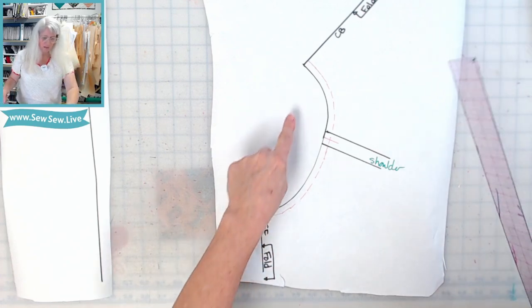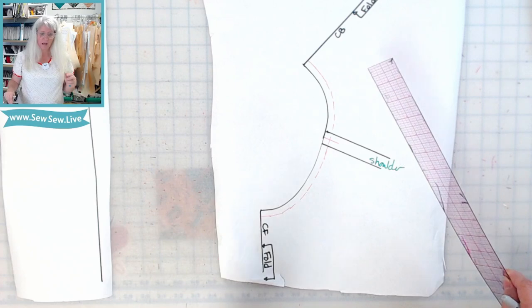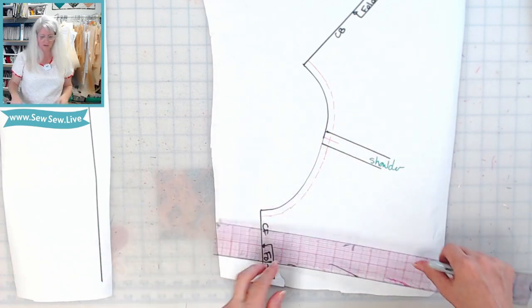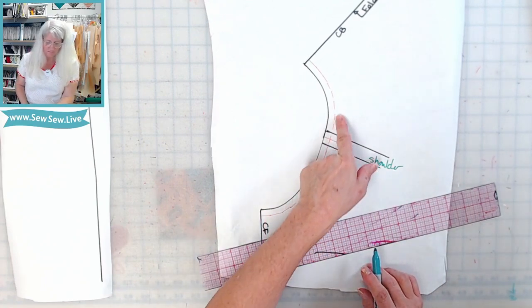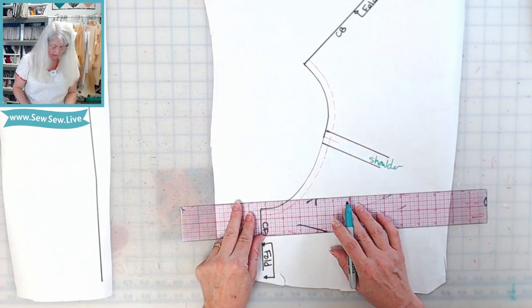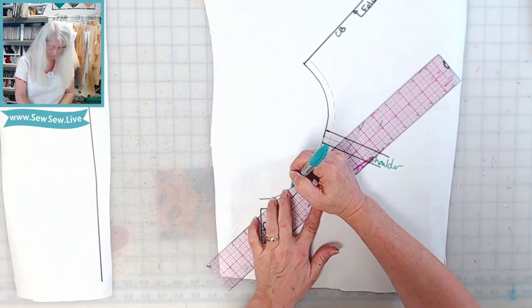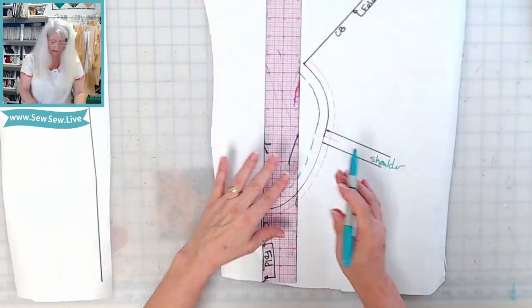All right, so we're going to draw in the neckband that we want. I'm going to use a seven-eighths inch neckband, that's kind of my standard width that I like. So I'm going to draw a parallel line to the seam right here, seven-eighths of an inch. I'm just going to go around and do this real quick.